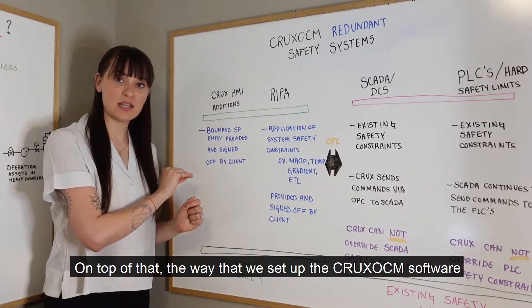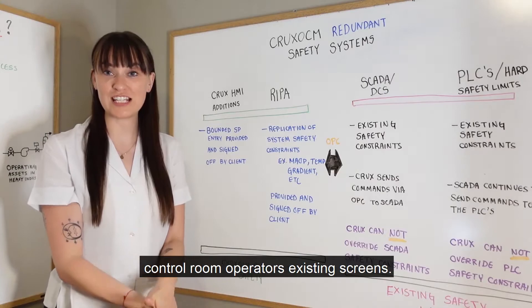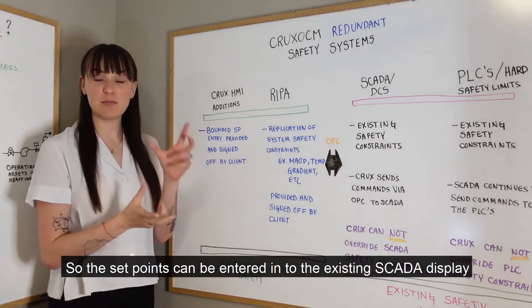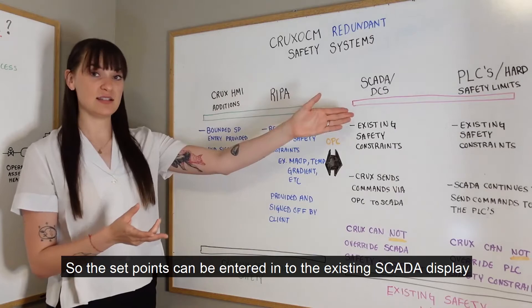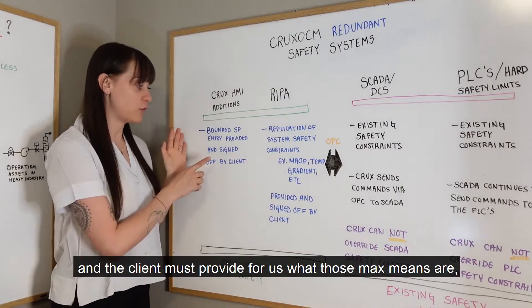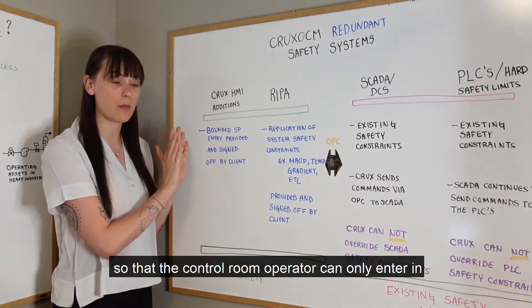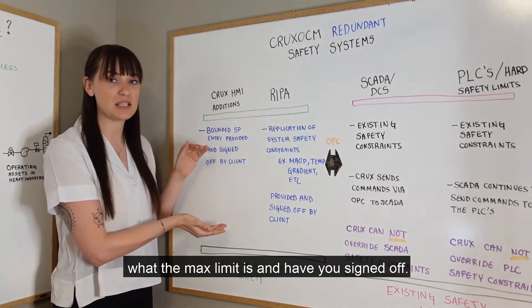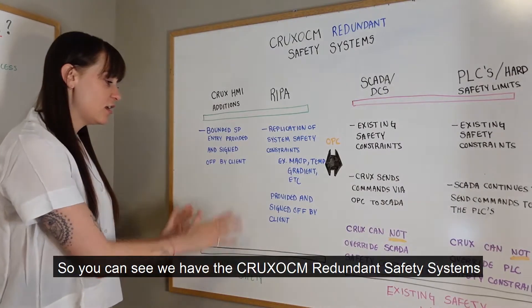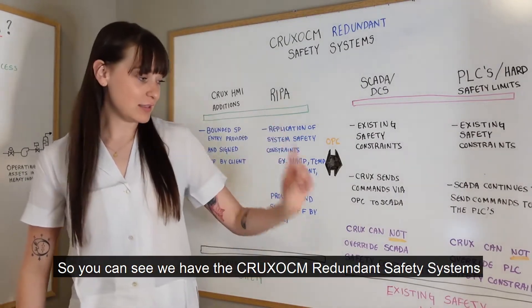On top of that, the way we set up the Crux OCM software is by adding a capability onto the control room operator's existing screens. Set points can be entered into the existing SCADA display, and the client must provide the max and min values so that the control room operator can only enter within those limits — and it has to be signed off.